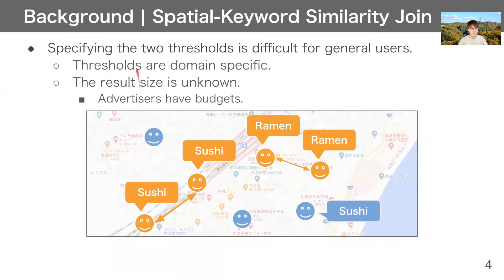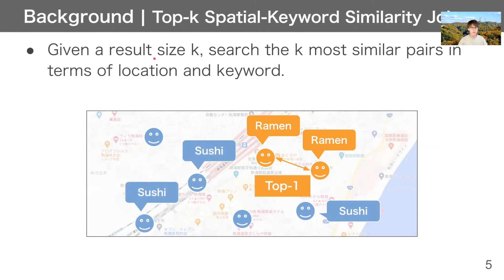However, specifying the two thresholds is difficult for general users, because search ratios are domain-specific and the result size is unknown. This is a problem for applications such as advertisement, because advertisers have budgets.